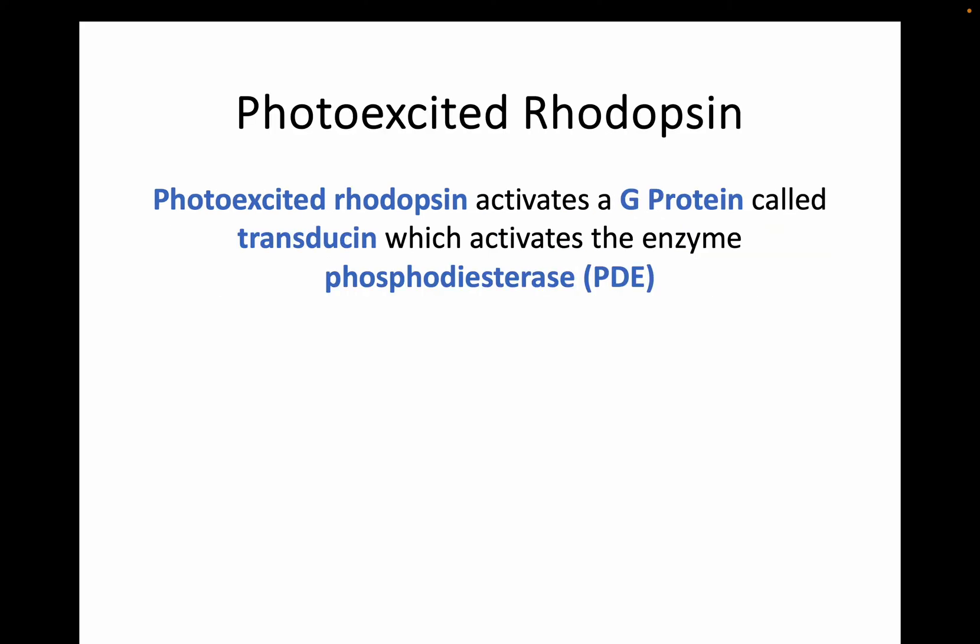Once that photoexcited rhodopsin causes this cascade, it activates a G protein. This G protein has a specific name — it's called transducin — which you need to be aware of. G proteins act as a relay between one molecule and another. This transducin G protein takes the signal amplified by the photoexcited rhodopsin and goes on to activate an enzyme which we call PDE, also known as phosphodiesterase. So we've already looked at photoexcited rhodopsin, a cascade, a G protein called transducin, and then phosphodiesterase.